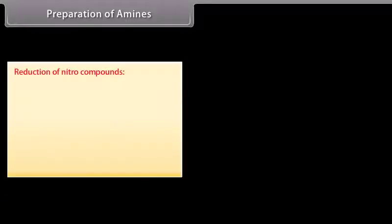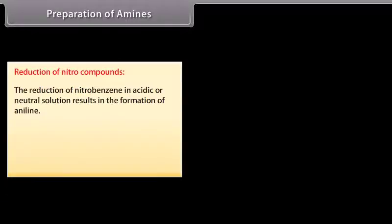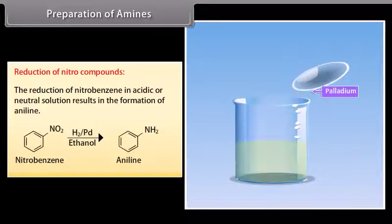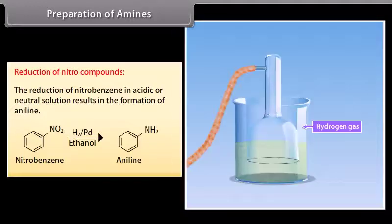Preparation of amines — Reduction of nitro compounds: The reduction of nitrobenzene in acidic or neutral solution results in the formation of aniline. Nitrobenzene is reduced to aniline by passing hydrogen gas in the presence of finely divided palladium.